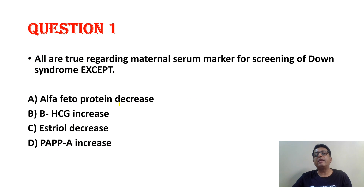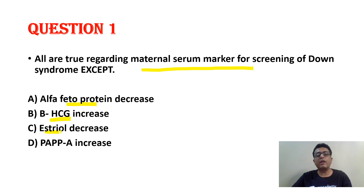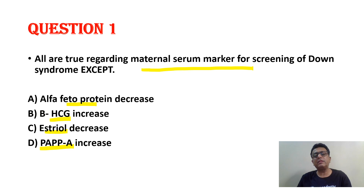All are true regarding maternal serum markers for screening of Down syndrome. We know alpha-fetoprotein, HCG, estradiol, PAPPA. PAPPA is pregnancy-associated placental protein A. We remember these are the four markers. But which increase, which decrease — sometimes we forget.